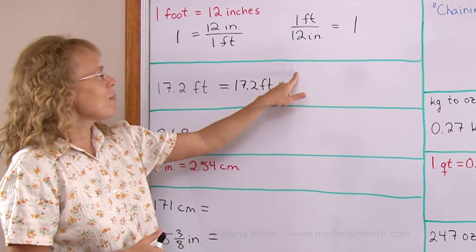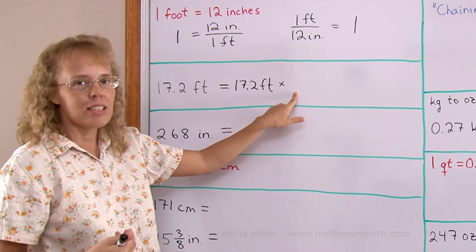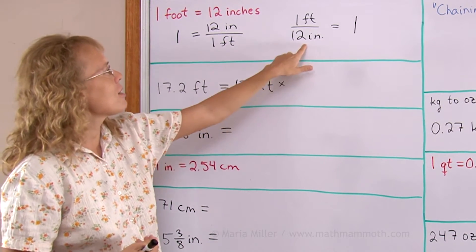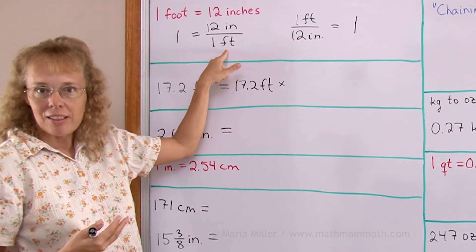I multiply it by one, but instead of writing one here, I will write either this or this ratio. Which one though?